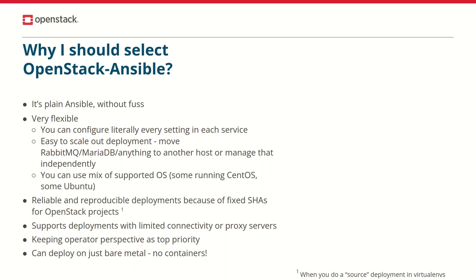You can control what version of each service will be installed and use your own fork if needed. Because we have a way to manage Ansible inventory and a pretty wide selection of predefined groups and variables, you can scale out service components like Nova API and Nova Conductor on different hosts, or have different RabbitMQ and Galera clusters per stack servers. Also, you can have a mix of operating systems in the deployment, like having some hypervisor nodes running CentOS and some Ubuntu.